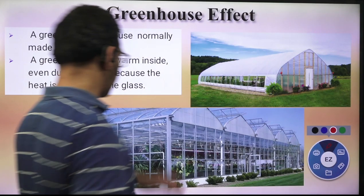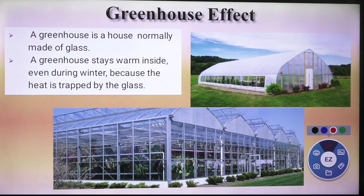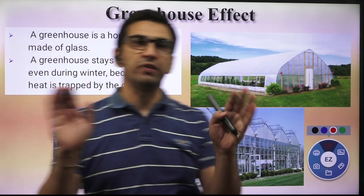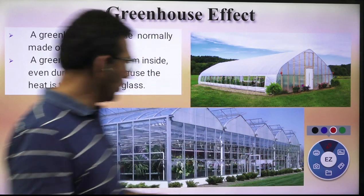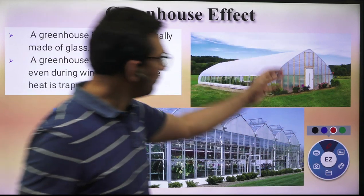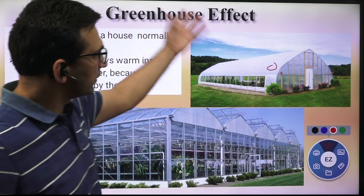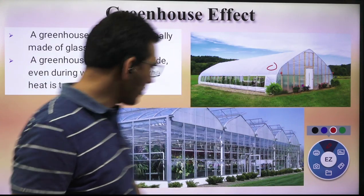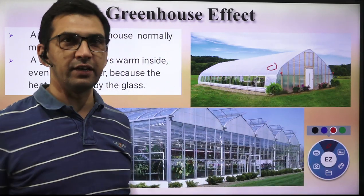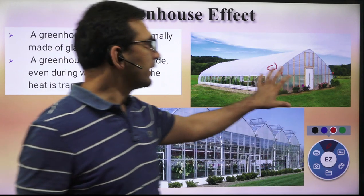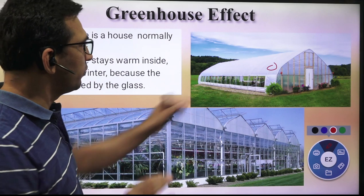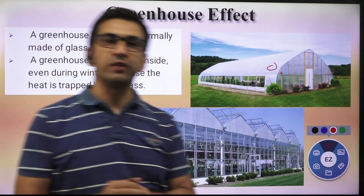A greenhouse is a structure - as you can see in the photographs - normally made up of glass. In many cases, glass is being replaced with other transparent materials like plastic through which rays can pass. These structures, which are used to maintain greenery inside them, we call them greenhouses.